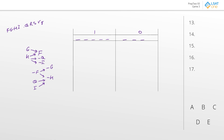We essentially have exclusive relationships created here. Between H and Q, we can't have them both in, so at least one has to be out. The same thing applies to H and I — they can't both be in, so at least one is going to have to be out. We can reserve a space on the outside. In fact, we can combine the two to say that on the outside, at the very least, we're going to have to have either an H or both Q and I.